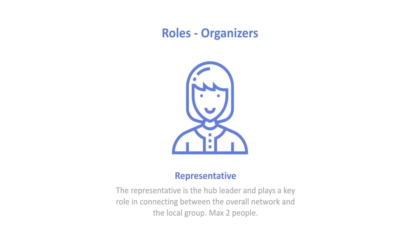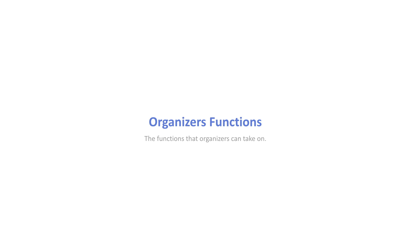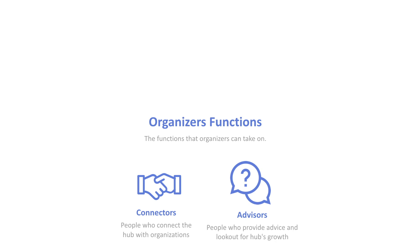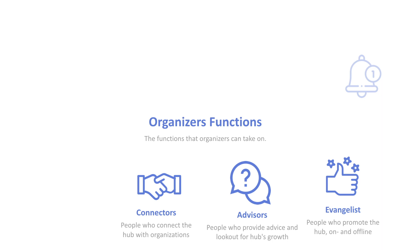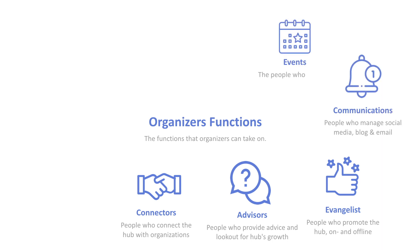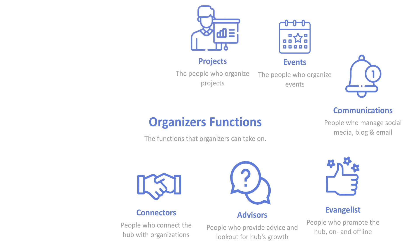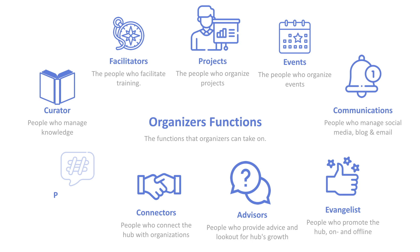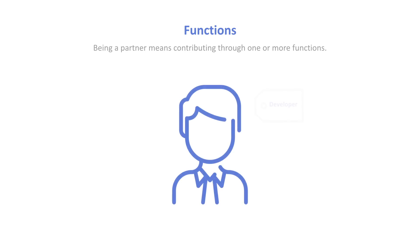Representatives — one or two people per hub — play a key role in connecting the overall network and the local group. Around them there can be a number of members taking on different functional roles: connecting, advising, acting as evangelists, handling communications and social media, helping with events, supporting different kinds of projects, facilitating learning — that's an important role — curating knowledge, or doing partnerships. Those are some of the functions organizers may take on, and one person can take on more than one.